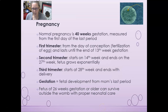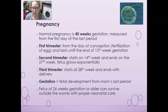Normal pregnancy is 40 weeks gestation. It is measured from the first day of the last period, because that's usually the easiest thing to track — most women can tell you the first day of their last period. The first trimester starts from the day of conception, when fertilization of the egg occurs up in the fallopian tube, and it will last until the end of the 13th week of gestation.